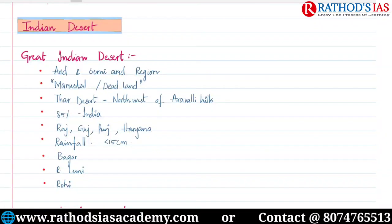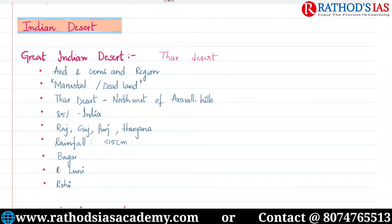The great Indian desert is also called as the Thar desert. It is one of the physiographic regions of India, along with Himalayas, northern plains, peninsula, coastal plains, and islands. The word 'desert' means an arid or semi-arid region. Desert is also called as Marustal or a dead land.